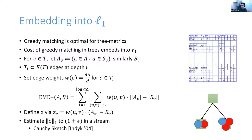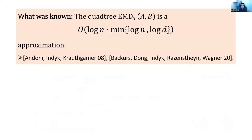Using this embedding, the quadtree cost gives a log(n) times min(log n, log d) approximation to the optimal cost — due to Andoni, Indyk, and Krauthgamer, and more recently Backurs, Dong, Indyk, Razenshteyn, and Wagner. This demonstrates that embedding to a tree and creating these edges gives roughly a log-squared approximation.